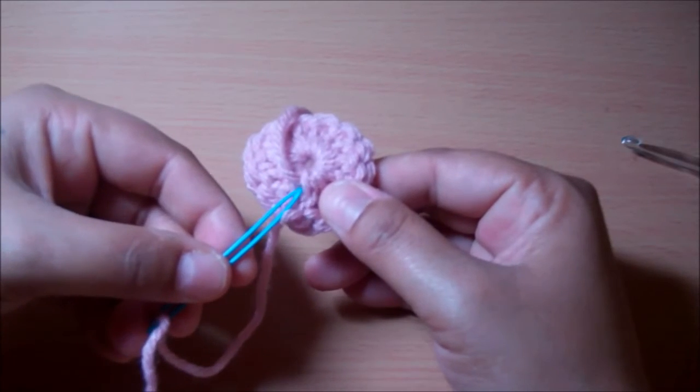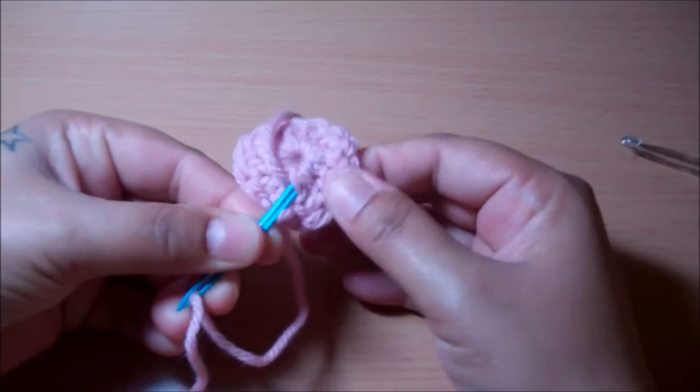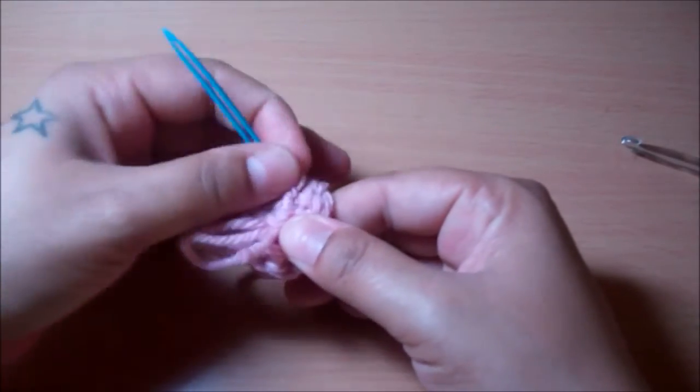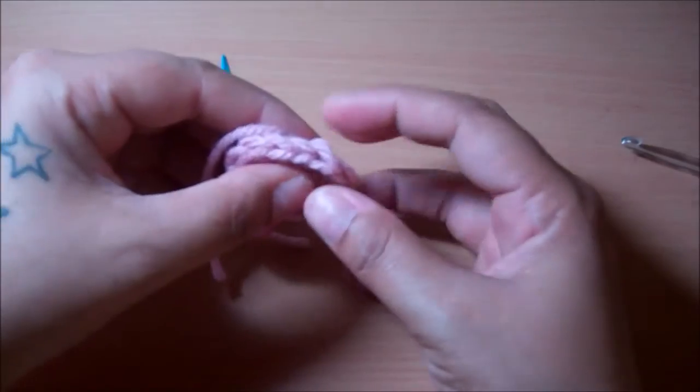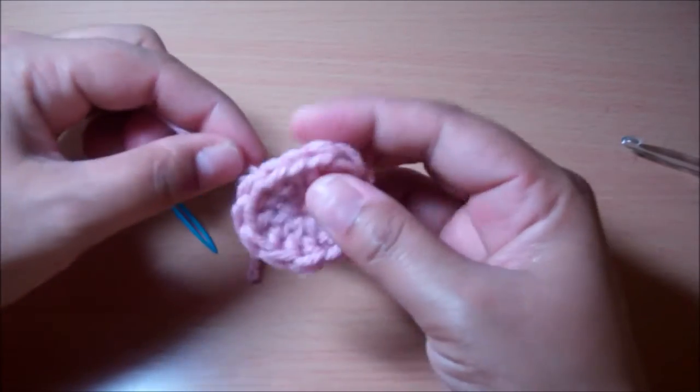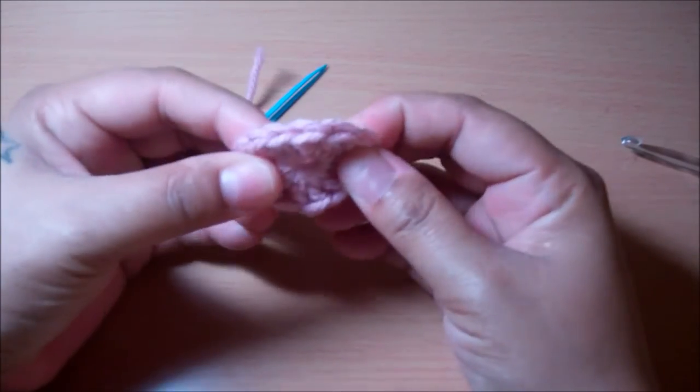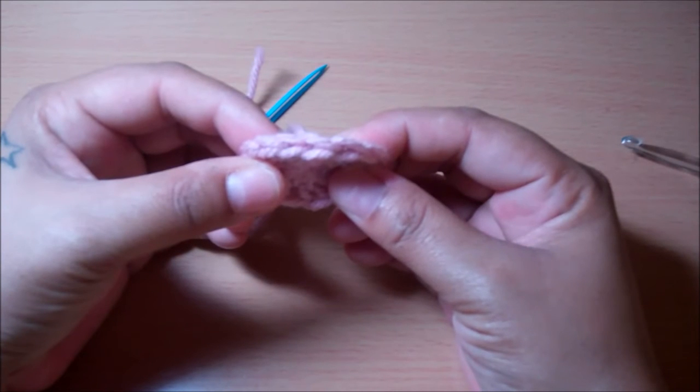And then all you have to do is just tuck it in through the back like so and hide your working yarn. And as you can see, a perfect join.